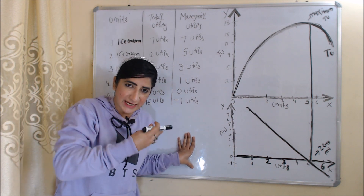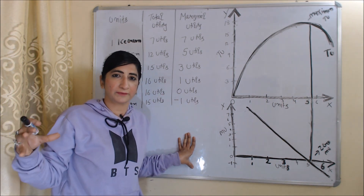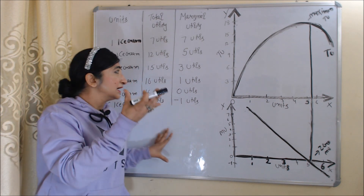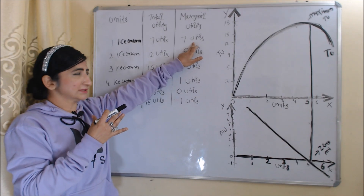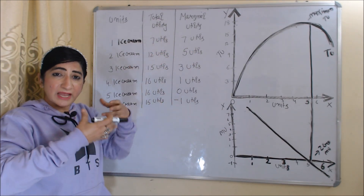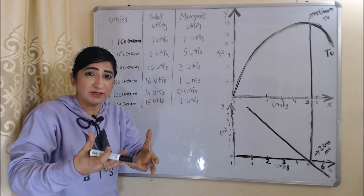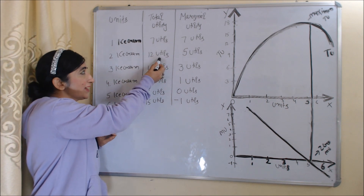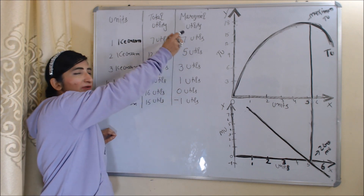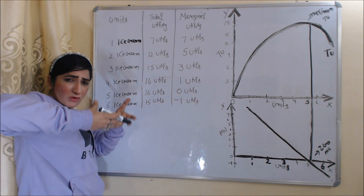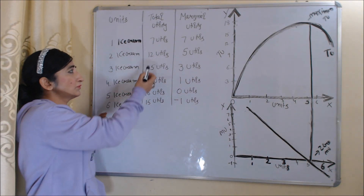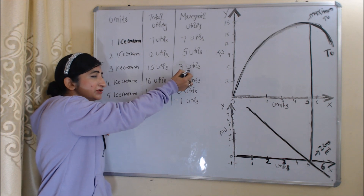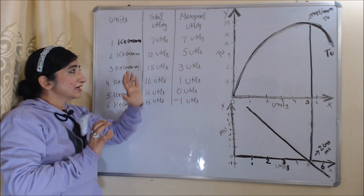Now for marginal utility: marginal utility is the change in total utility after consuming one more unit of product. Initially marginal utility is equal to 7 utils. As we consume one more unit, total utility increases from 7 to 12, so change is 12 minus 7 equals 5 — this is our marginal utility. Consuming one more unit, total utility increases from 12 to 15, so change is 15 minus 12 equals 3 utils, which is our marginal utility.